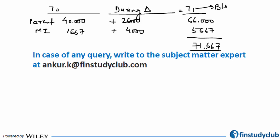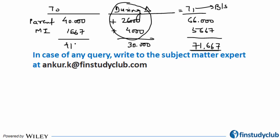That's how the income statement consolidation ties together. At the total group level we earned 30,000, and we can discuss things at a total level as well. Sometimes the interaction between these concepts can be a bit confusing, but the linkage between the income statement and balance sheet consolidation is what ties it all together.